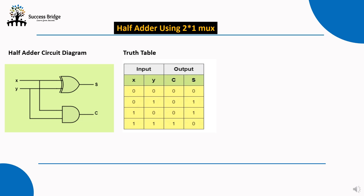Observing the truth table: in the sum column, the ones appear at minterms 1 and 2 (input combinations 0-1 and 1-0). For the carry output, the one appears when x=1 and y=1, corresponding to minterm 3. So sum = Σm(1,2) and carry = Σm(3). Next, we implement the half adder using the 2-to-1 multiplexer.